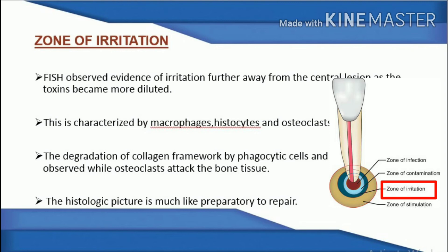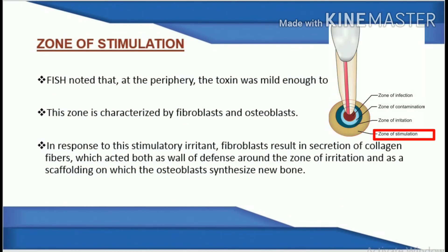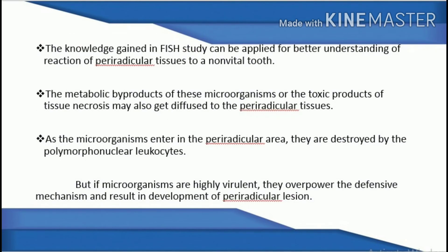Zone of irritation: Fish observed evidence of irritation further away from the central lesion as toxins became more diluted. This zone is characterized by macrophages, histiocytes, and osteoclasts. Degradation of collagen framework by phagocytic cells and macrophages was observed while osteoclasts attacked bone tissue, presenting a histologic picture preparatory to repair. Zone of stimulation: at the periphery, the toxin was mild enough to act as a stimulant. This zone is characterized by fibroblasts and osteoblasts. Fibroblasts secrete collagen fibers acting as a wall of defense and scaffolding on which osteoblasts synthesize new bone.